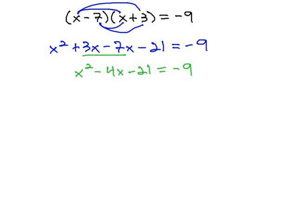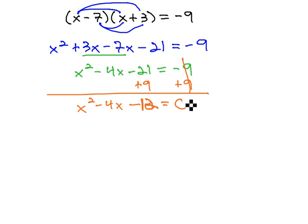Now we're ready to work it out. First, it must equal zero, so let's add 9 to both sides. This gives us x squared minus 4x minus... How about 12? That's better. Equals zero.